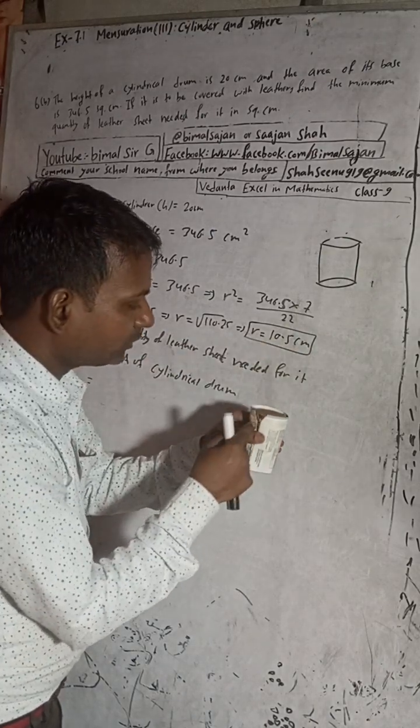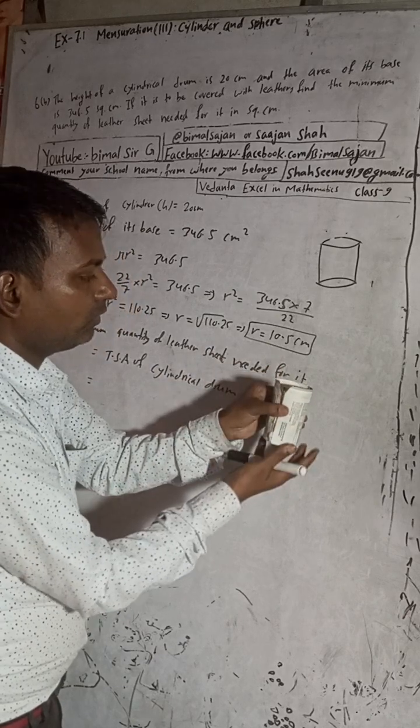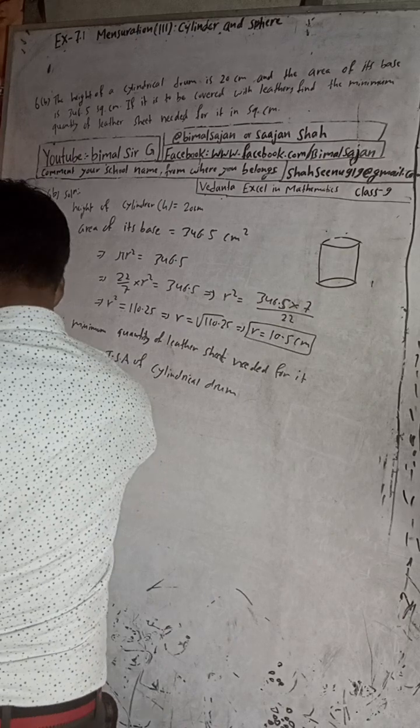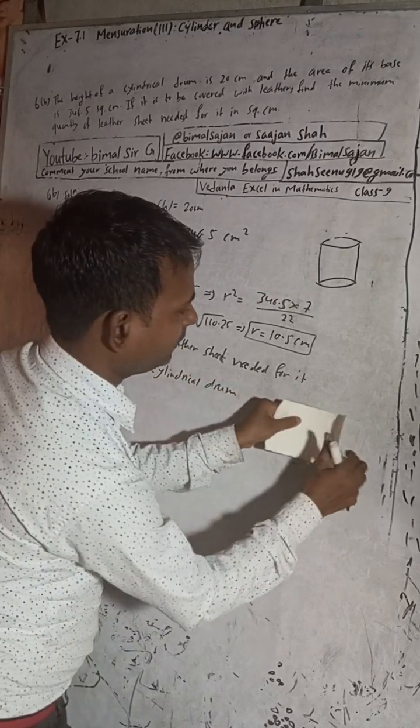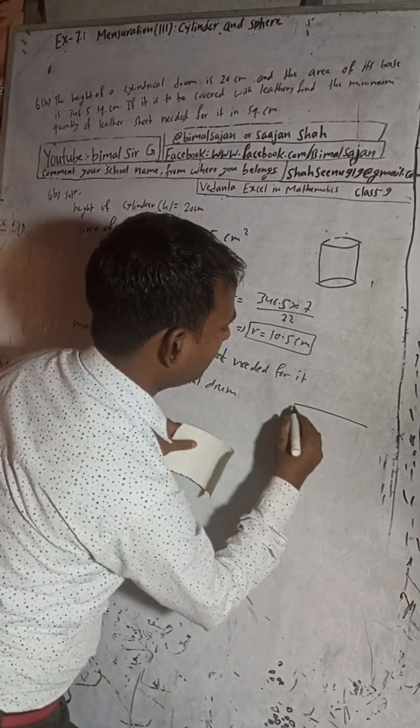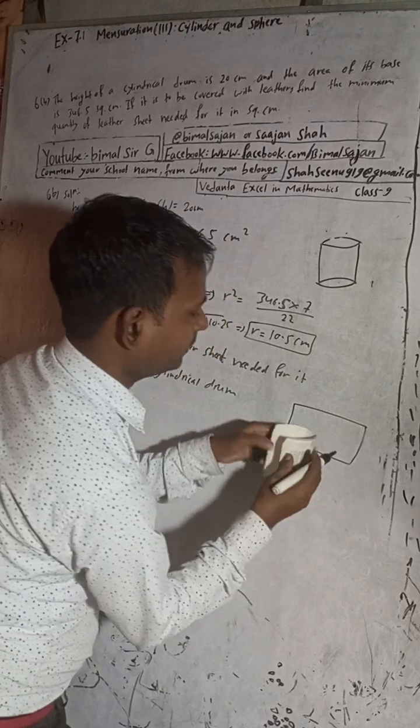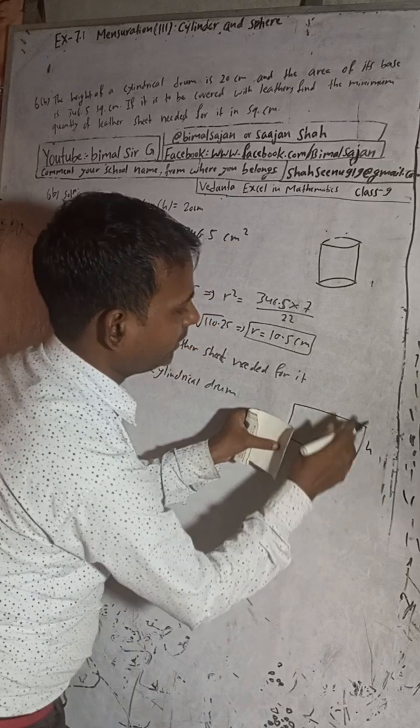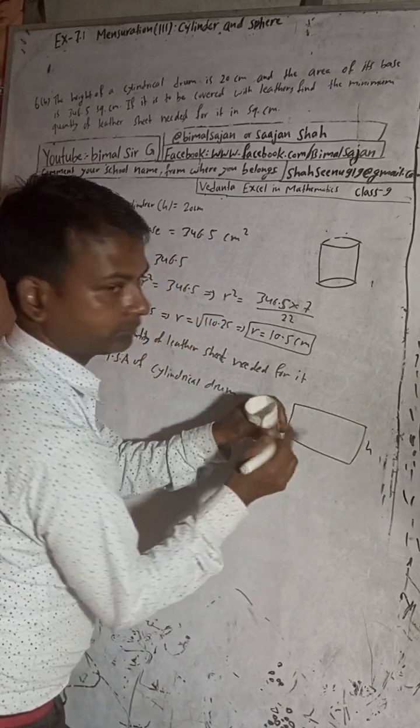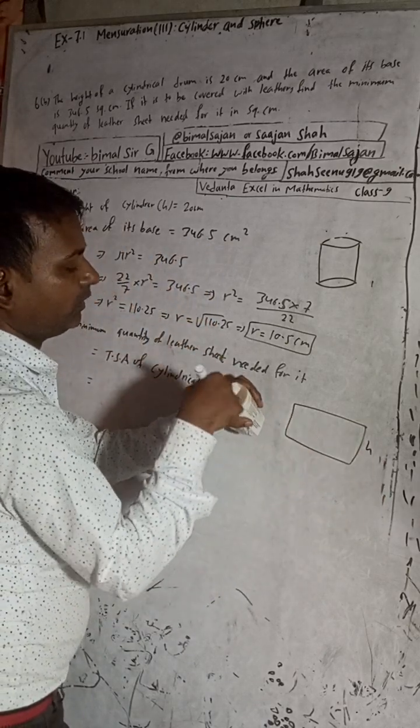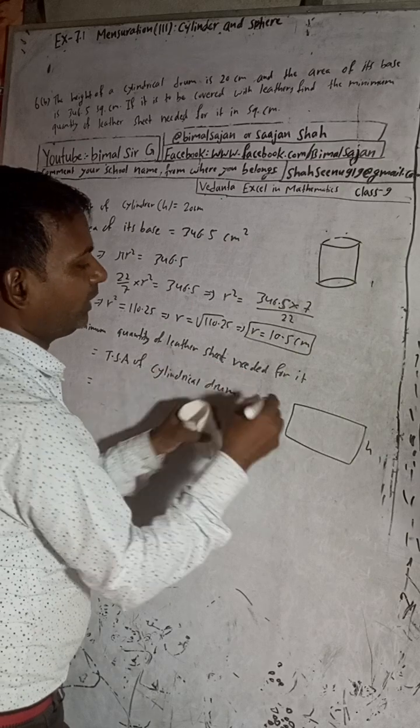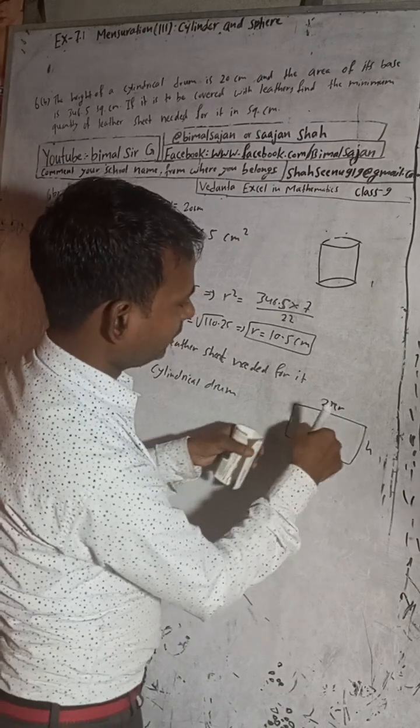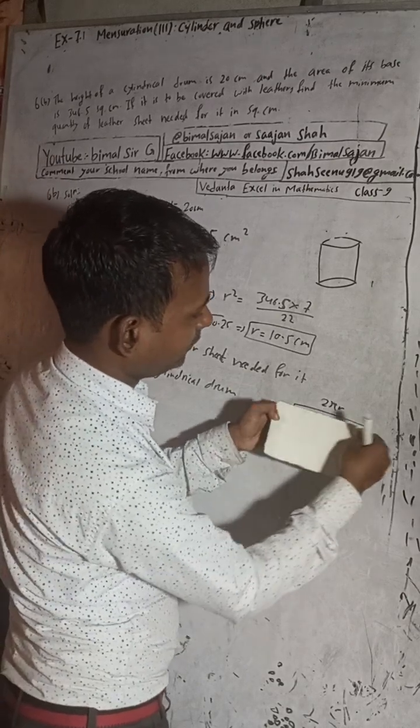So now I will draw this rectangle. This type of shape will form - the curved surface will form this rectangle. And this will be height as breadth, and this circle's perimeter will be 2πr. This 2πr will be our length because this is the circle. This circle will be the length.